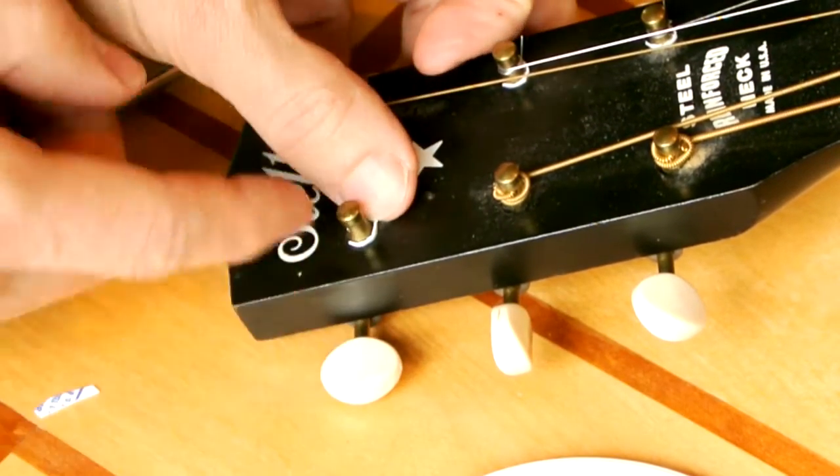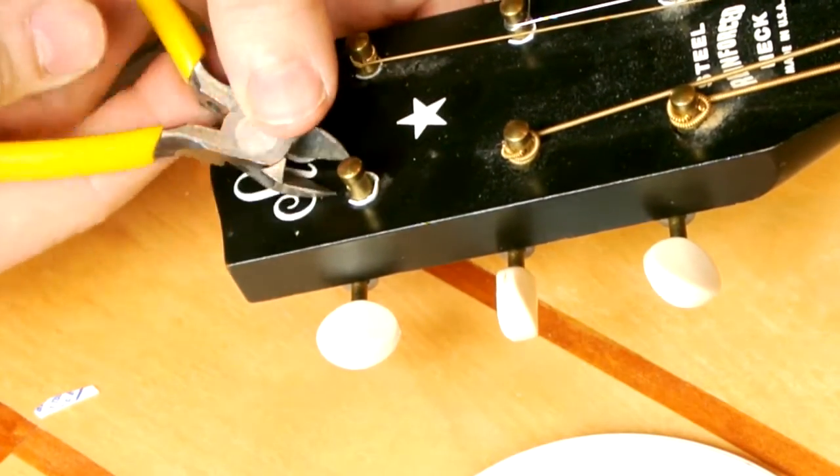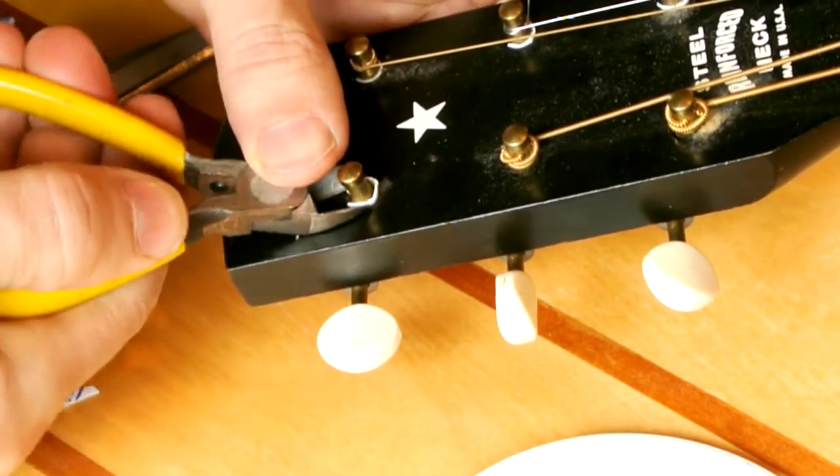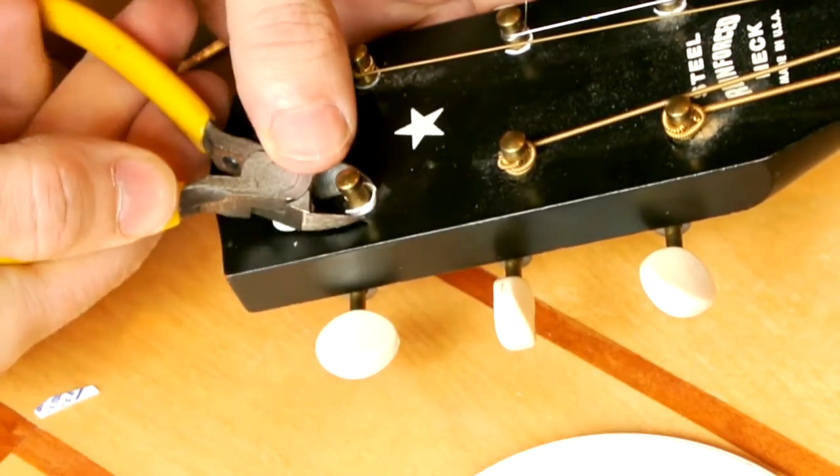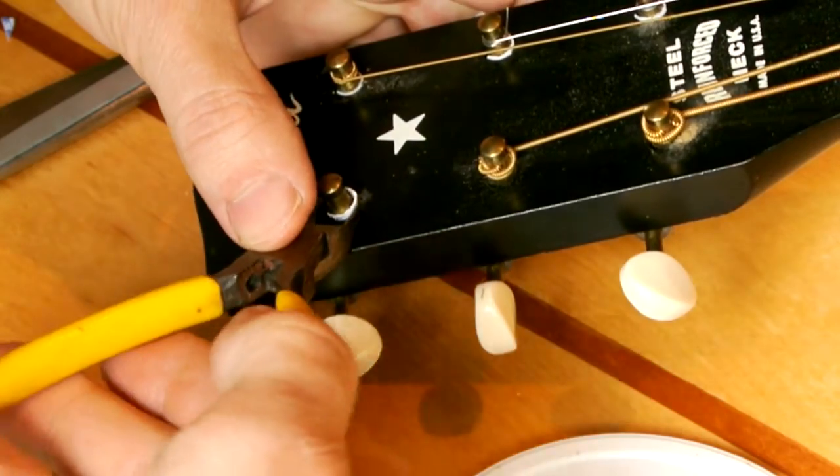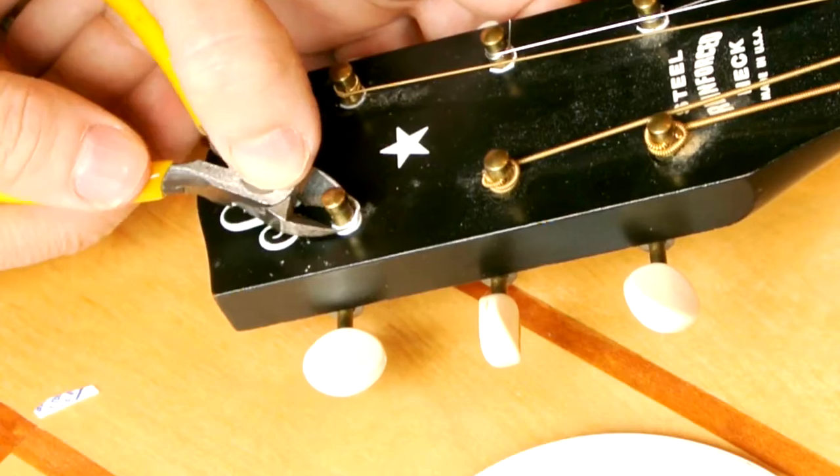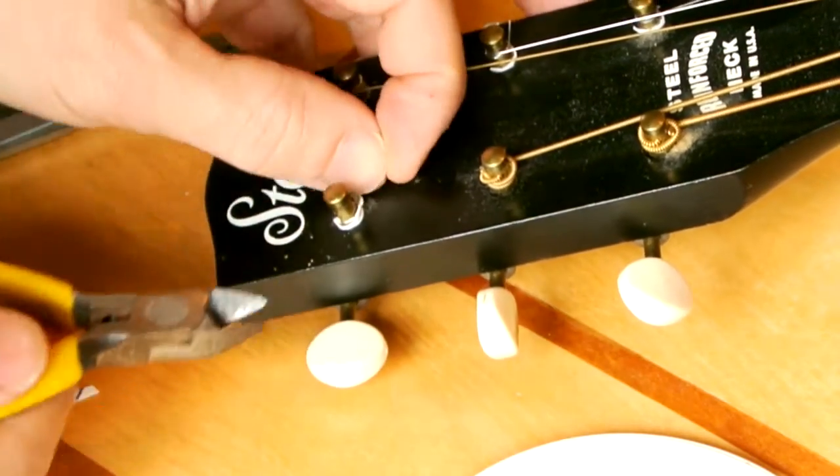Now what happens every time is I mess up the edge of this as I jam it in. So I'm just going to use this pair of snippers to kind of crimp it around the post. There's no danger of cutting the post off—it's much harder than that. This basically cuts off the excess so it doesn't look as ugly.